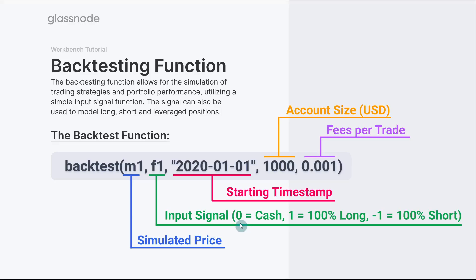The input signal is a function where zero indicates fully in cash, one indicates 100% long, and minus one indicates 100% short. You can also apply leverage — for example, a value of two or three. Essentially, the input signal is a multiplier on the simulated price. At a value of one, the portfolio follows price one-to-one; at two, it follows price two-to-one; at negative two, it is inverse at 200% of current price movements. It takes the simulated price and multiplies it by the input signal relative to the account size.